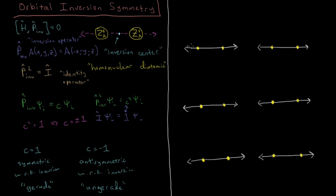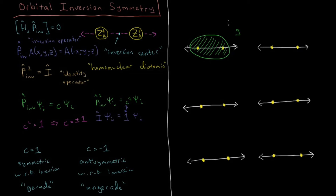Let's look at some examples. If we have two s orbitals overlapping in phase, they form an orbital that has just one phase — all positive. If I pick a point and go to its inverse, the sign stays positive. Any point's inversion still has the same positive sign, so this orbital is gerade, g. And from our previous video, you should recognize this as a sigma orbital, so it's called a sigma g orbital.